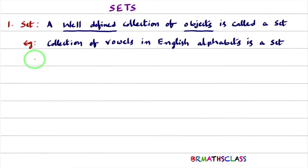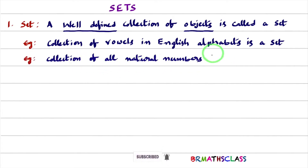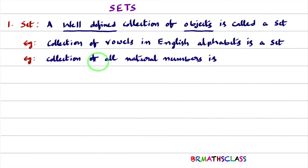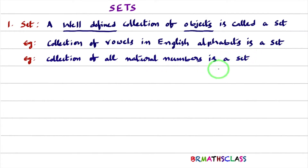Now consider the collection of all natural numbers. Natural numbers — 1, 2, 3, 4, and so on — are well defined. So the collection of all natural numbers is a set.